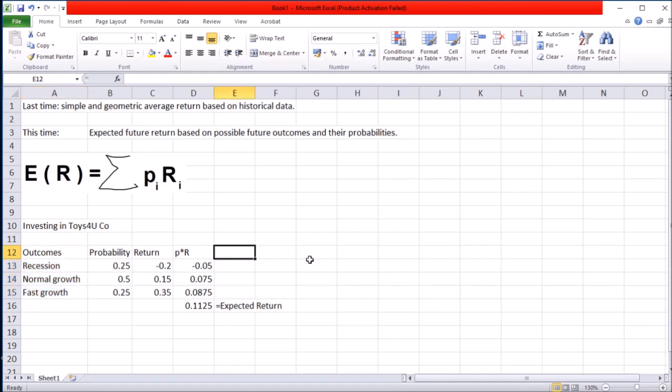First, we need to look at all the differences of the returns corresponding to different outcomes from the mean. The differences of these returns from the expected return. That's these returns minus the average or expected return.